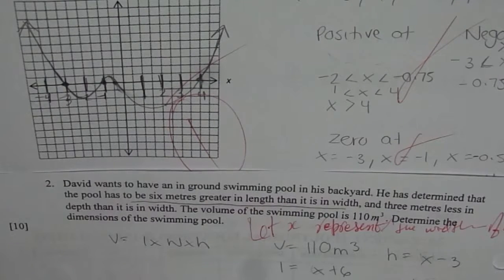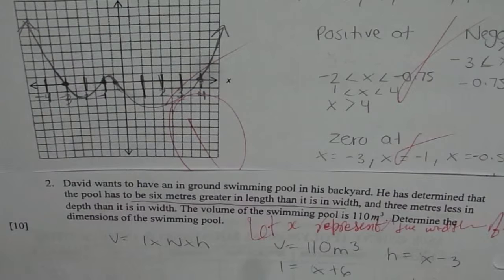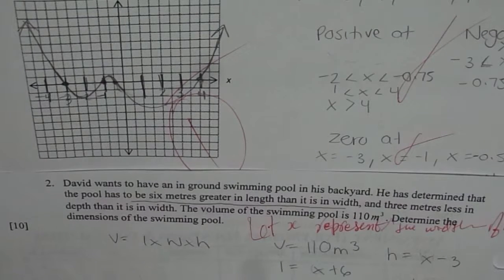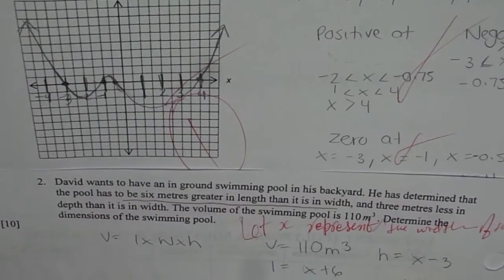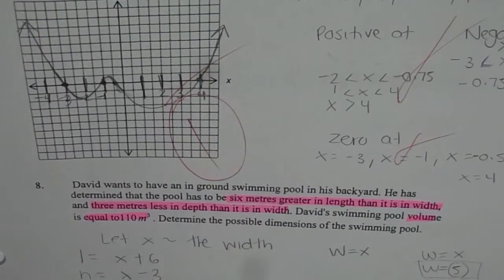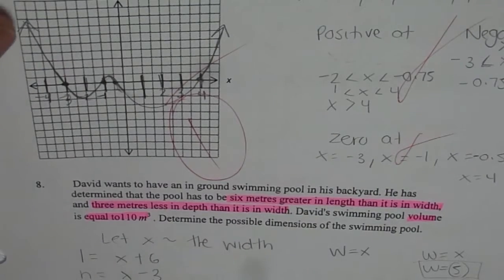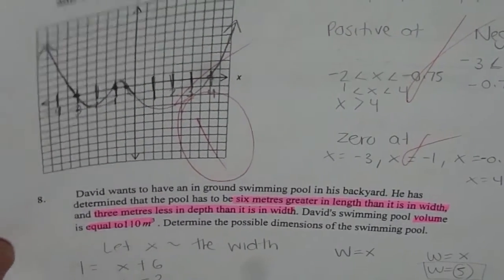I am Anil Kumar sharing with you a test question from Polynomials and Inequalities, Advanced Functions Grade 12. This particular question is very popular — this year I have seen it being asked in two different schools. This is the David wants to have an in-ground swimming pool question, and we will discuss it at length.